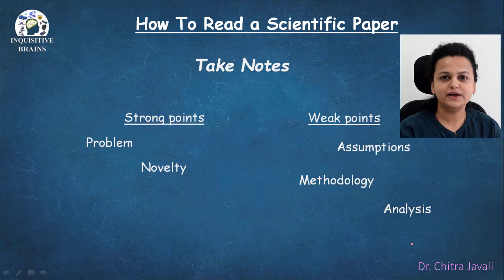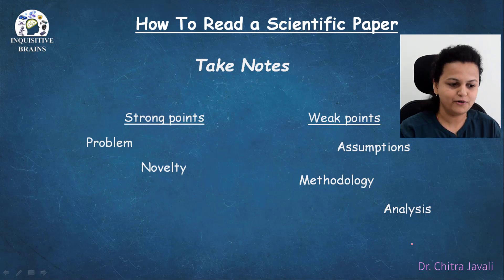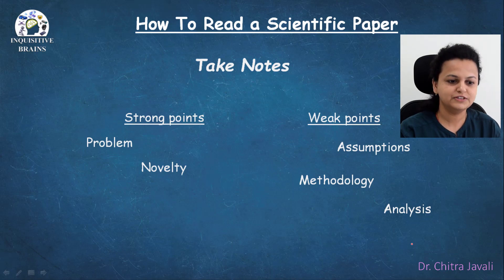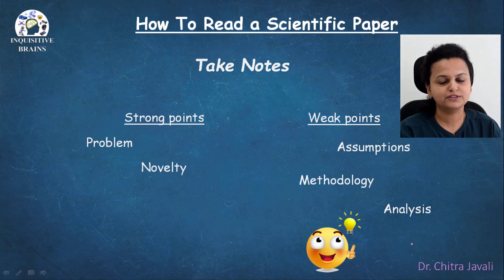This is also helpful when you are writing your literature survey. Once you have identified the weak points, these are the low-hanging fruits, which will be a way to identify a new problem or the approach you will follow for this new problem.